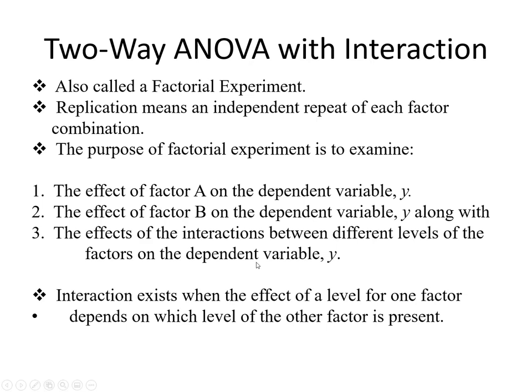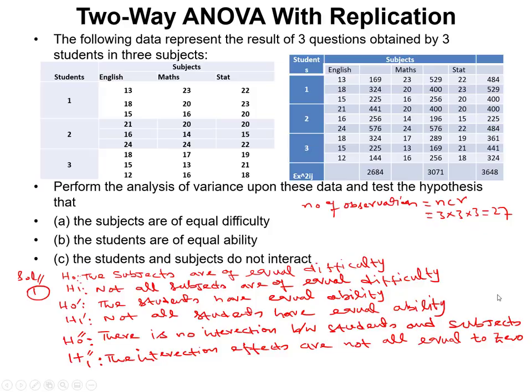Interaction exists when the effect of a level for one factor depends on which level of the other factor is present. You will understand this from a simple example.